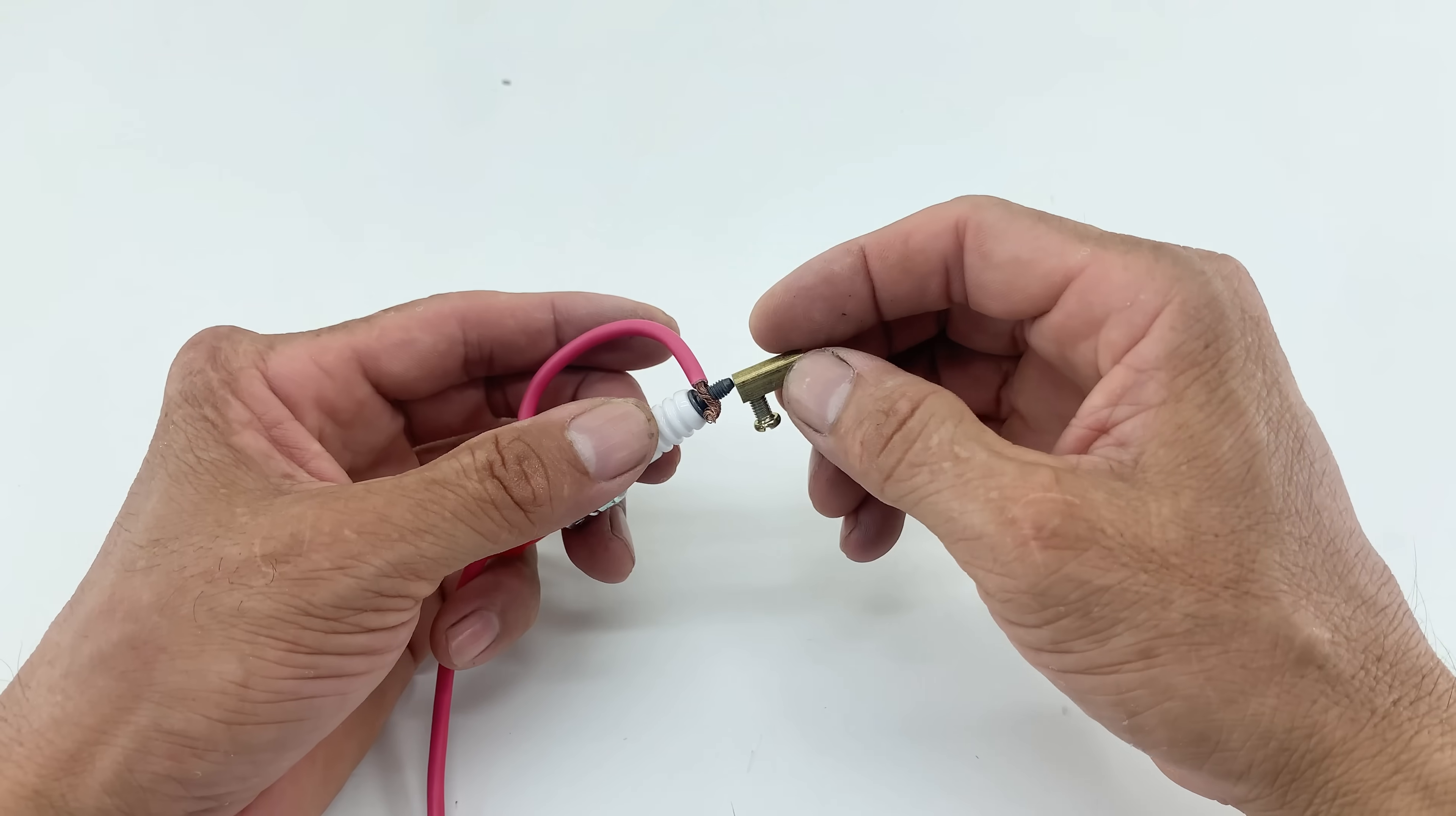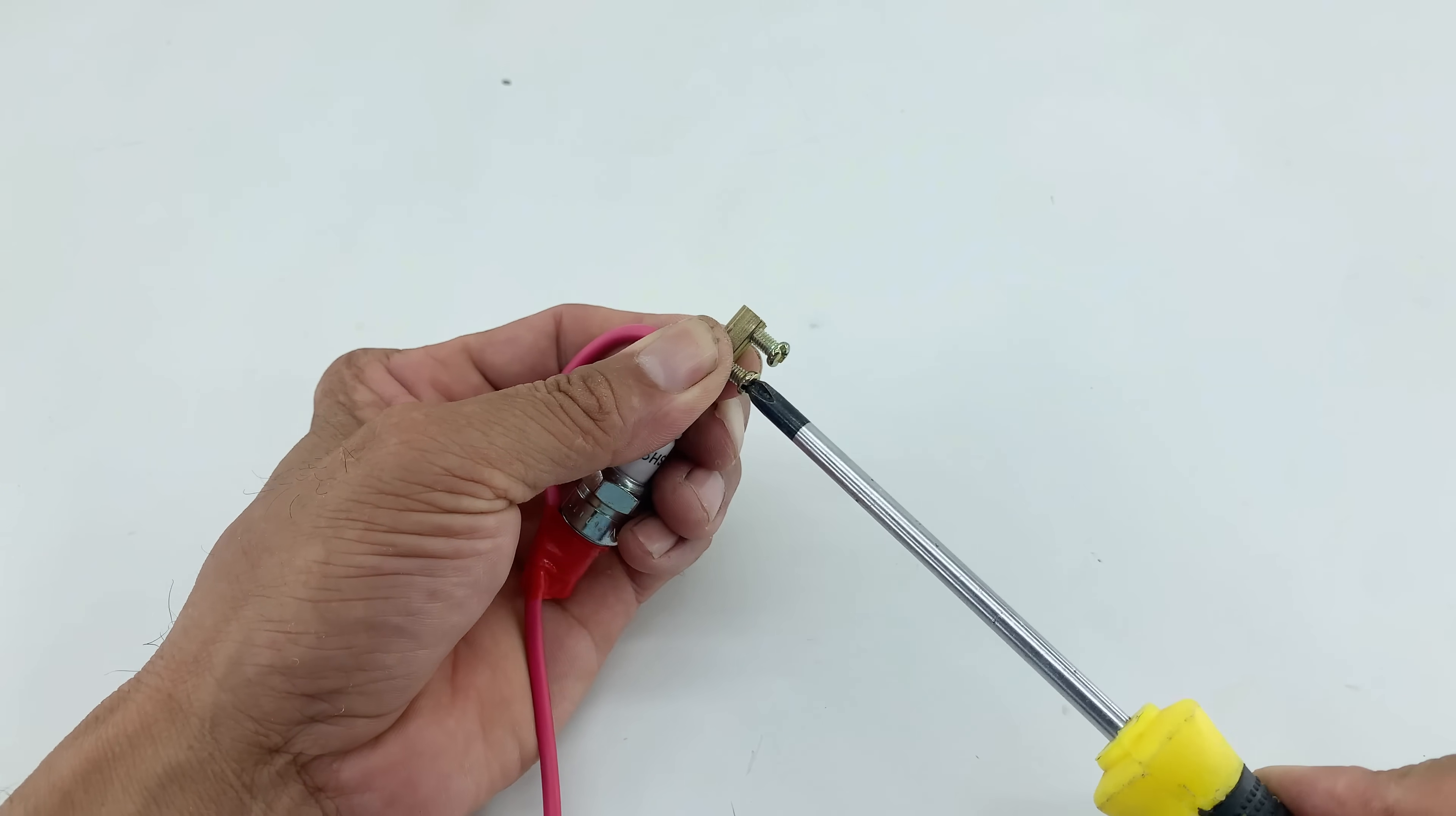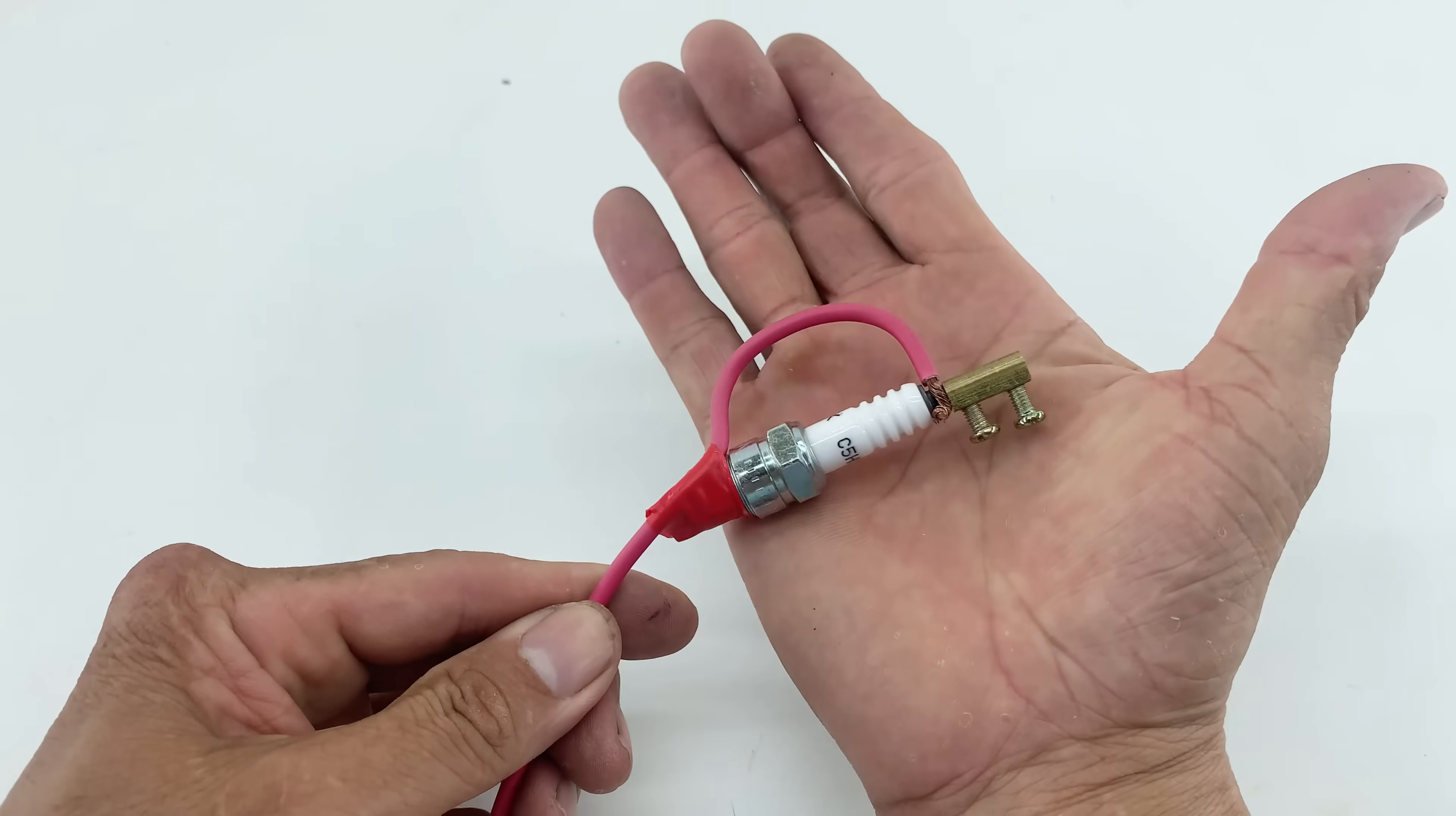I'm going to carefully attach the small brass terminal to the very top of the spark plug, ensuring a tight connection so that current can flow effectively. This will be the main point where our heating element connects.